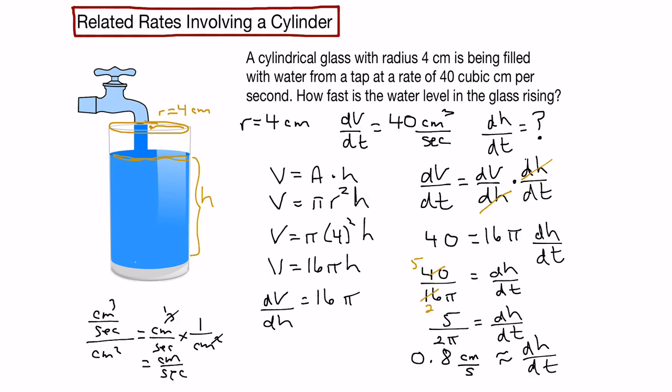So what this is saying is that our water level is going to rise at a constant rate of 0.8 centimeters per second until it eventually fills up. And there you go.